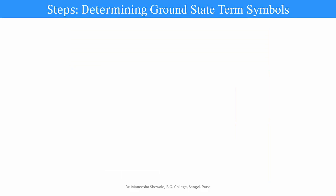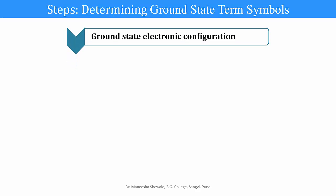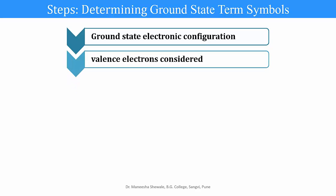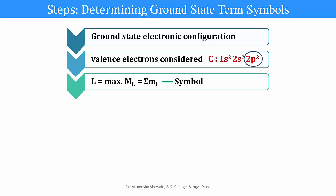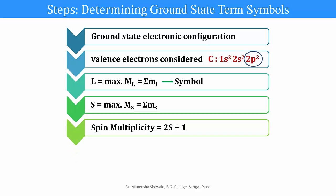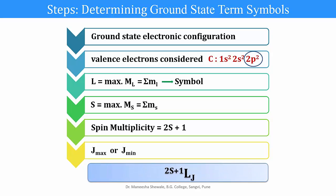The steps for determining the ground state term symbol: first, write down the ground state electronic configuration of the element. Inner electrons do not contribute to angular momentum, so only the valence electrons are considered. For carbon with atomic number 6, the electronic configuration is 1s², 2s², 2p², so only the valence 2p electrons are considered. Then calculate the value of L and assign the symbol, calculate S to get the spin multiplicity, obtain J maximum or J minimum, and finally write the ground state term symbol 2S+1LJ.